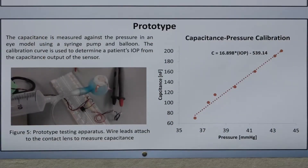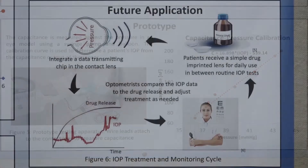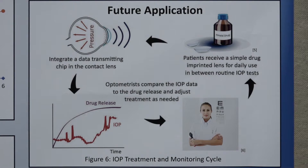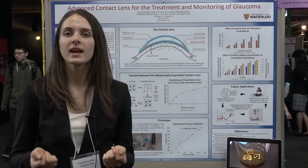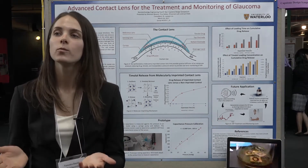The big picture is to create a glaucoma treatment and monitoring cycle, where a patient will go to an optometrist's office and wear the contact lens with the pressure sensor and drug release for a 24-hour period. Using wireless technology, like an RF chip integrated into the sensor, this data will be transmitted to a device available to the optometrist. The optometrist can then look at the IOP trends, compare them to the drug release, and adjust the prescription as needed. On a daily basis, the patient will receive contact lenses that are a single layer containing the drug-releasing lens.